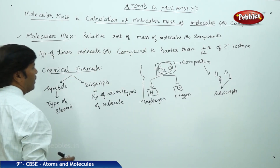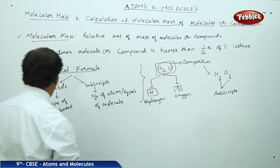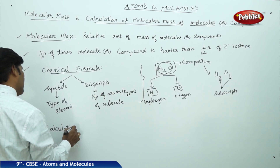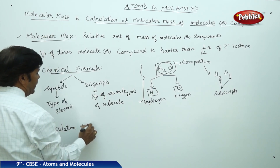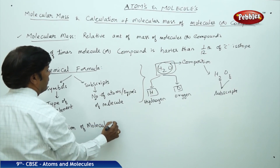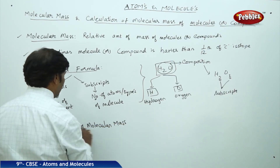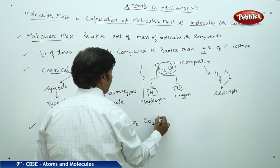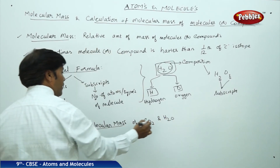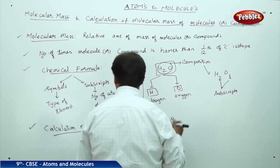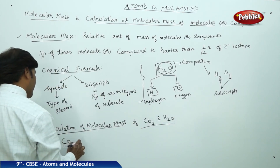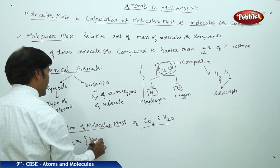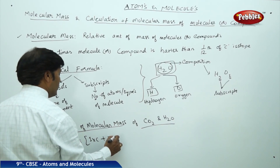Now, for the calculation of molecular mass, let us take carbon dioxide and water as examples. Carbon dioxide is made up of one carbon plus two oxygens, so we write: one times carbon plus two times oxygen.